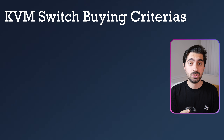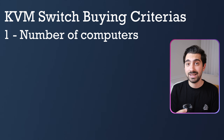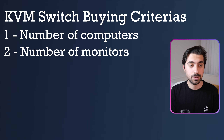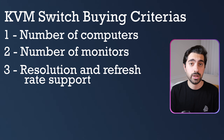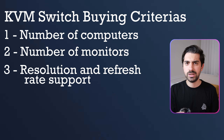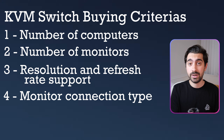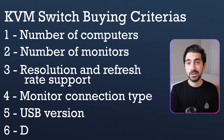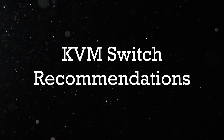When buying a KVM switch, there are a few questions to ask yourself. First, the number of computers — the higher you go, the more complex and expensive the switch. The same goes for the number of monitors; you can switch one monitor or up to four. You should also consider the refresh rate and resolution — for 4K 60Hz, you'll want HDMI 2.0 support. The monitor connection type matters too: some support HDMI, while others support DisplayPort and USB-C. Finally, consider the USB version — switches with USB-C generally come with high data transfer speeds.